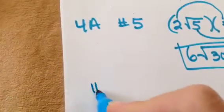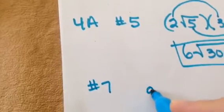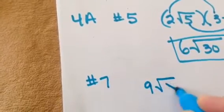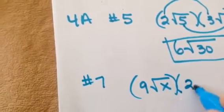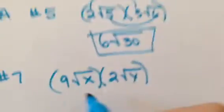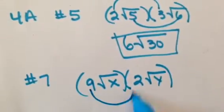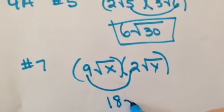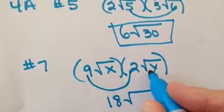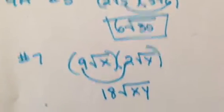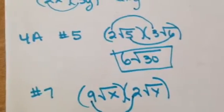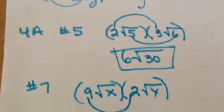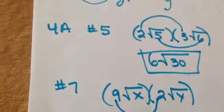Let's try another one. Look at number 7. It says: 9 square roots of x times 2 square roots of y. Don't make this hard. Multiply what's on the outside: 9 times 2 is 18. Multiply what's on the inside, and it's just x times y. So you get 18 square roots of xy. It's that simple.